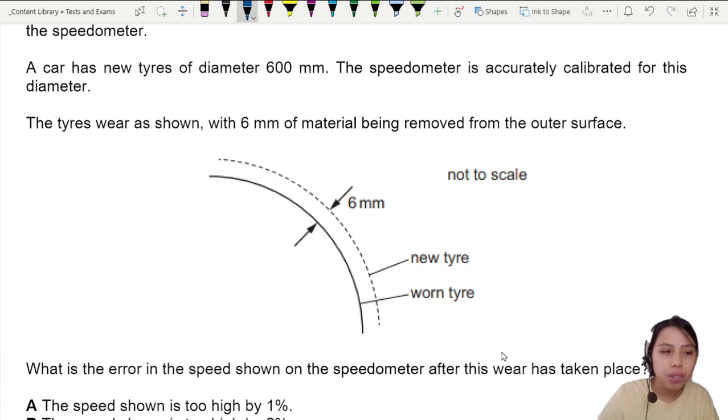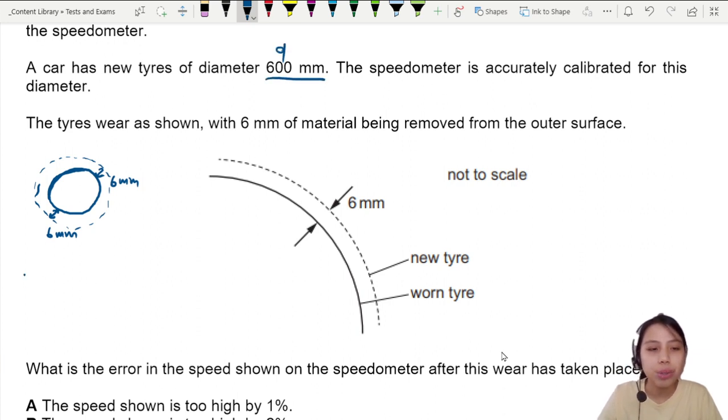The tire when it's new has a nice big diameter. Over time it shrinks because the rubber wears away. It shrinks by 6mm on this side. Don't forget the other side also shrinks by 6mm. So I'm going to find the percentage error or percentage uncertainty. This will be 6 plus 6 millimeters over the diameter which is 600, times 100 to get a percentage. This gives me 2%. So after you wear the tire off, your error is going to be 2% in your speedometer.